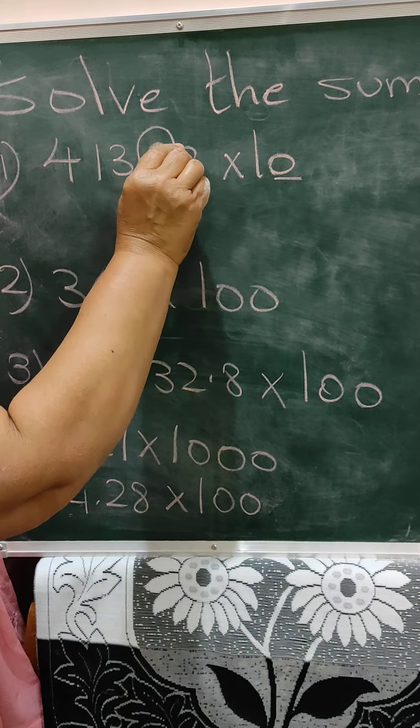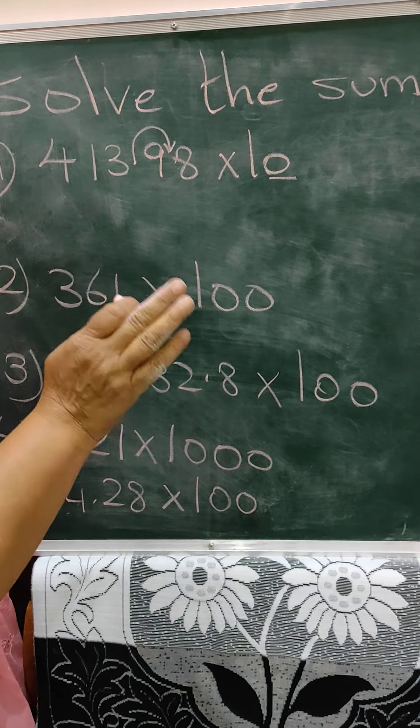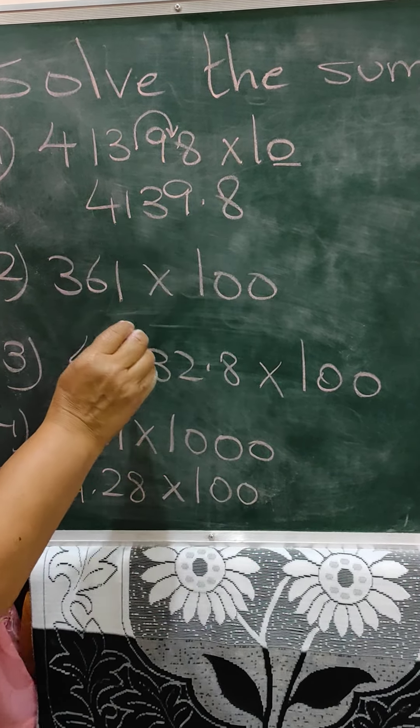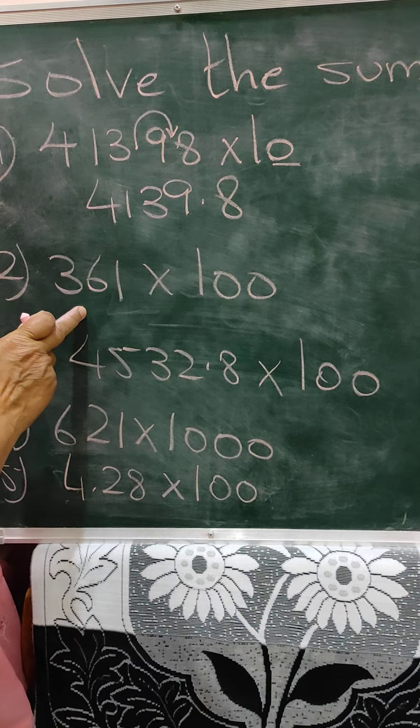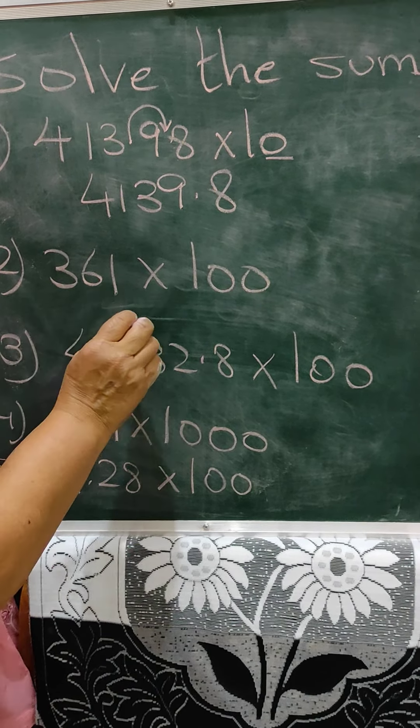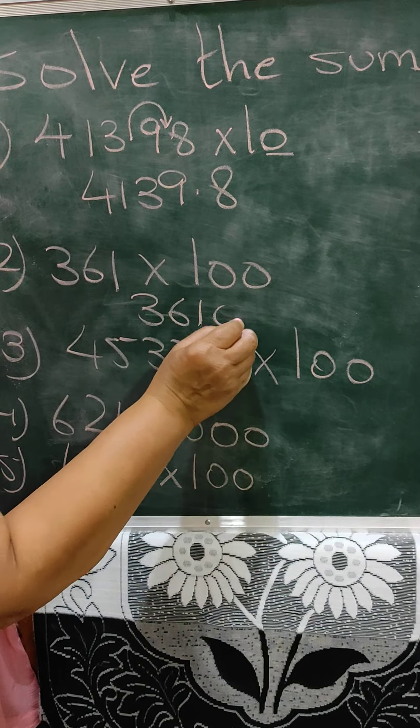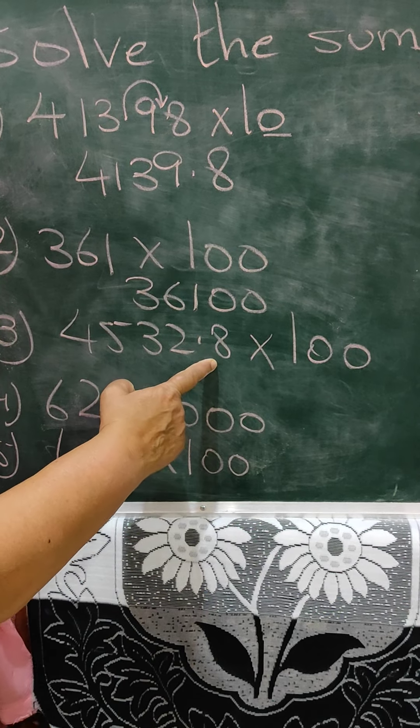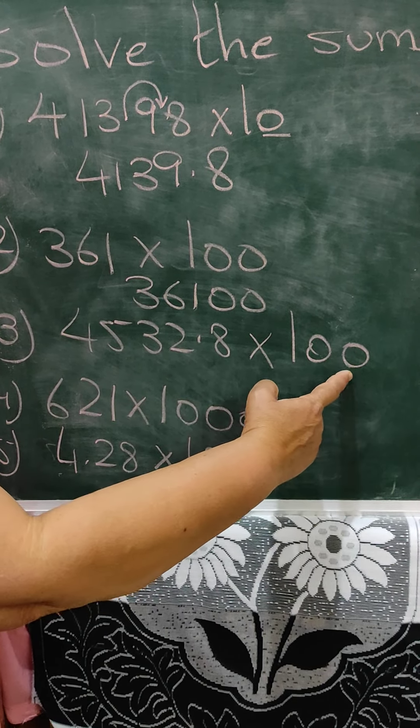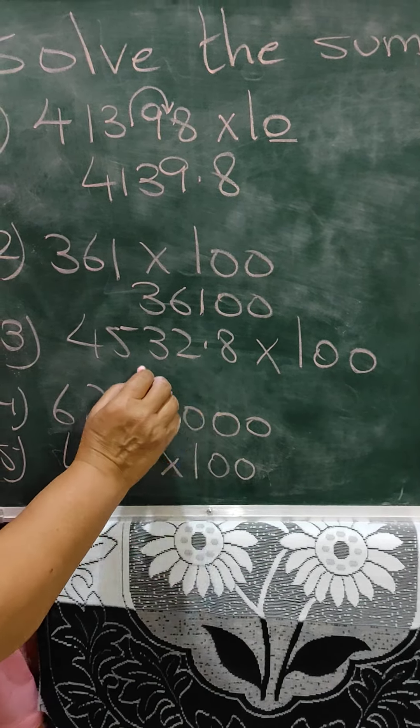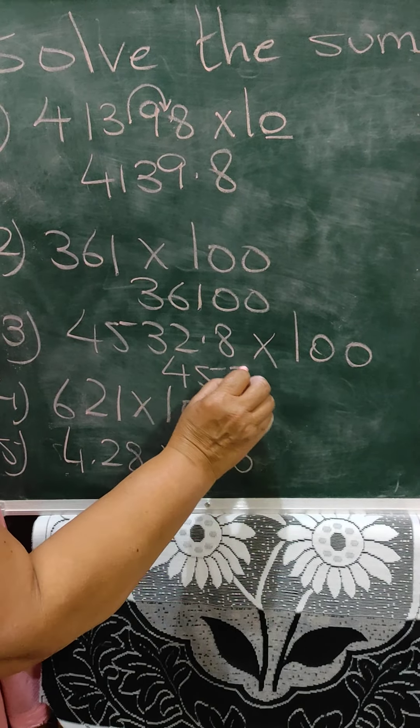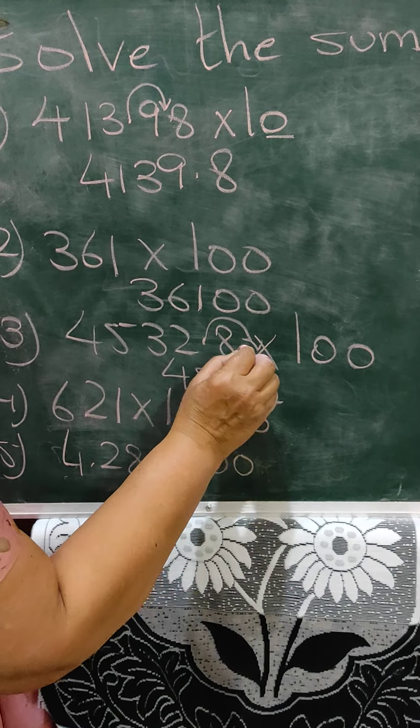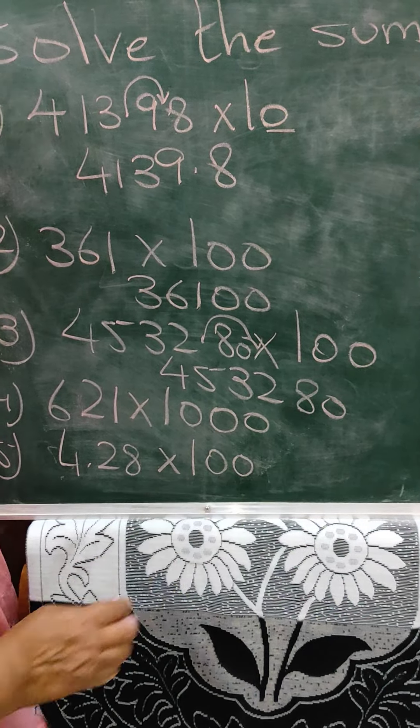So the first sum is 413.98 multiplied by 10. Second sum is 361 multiplied by 100. Third sum is 4532.8 multiplied by 100. Fourth sum is 621 multiplied by 1000. And fifth sum is 4.28 multiplied by 100. Now, here you can pause the video. Do the sums and check the answers.